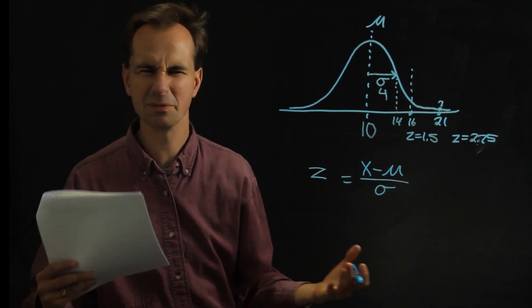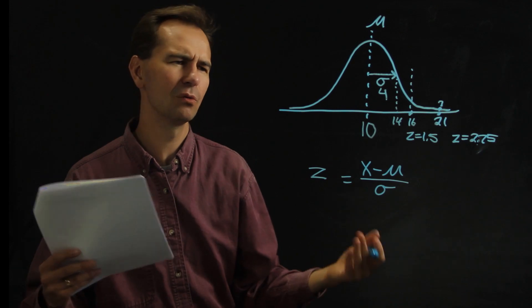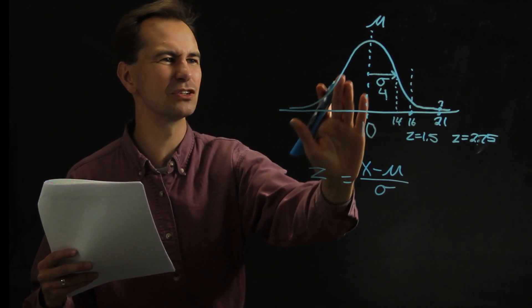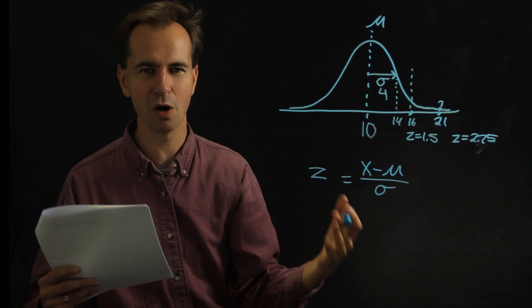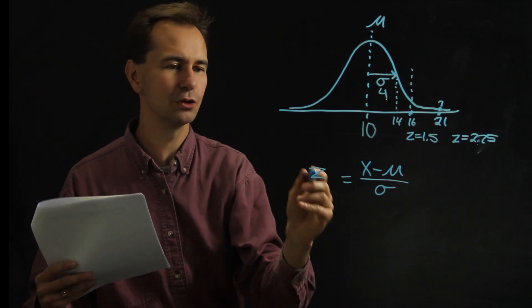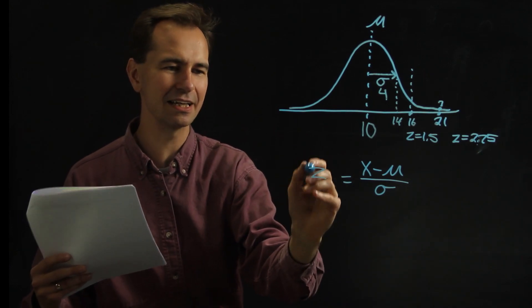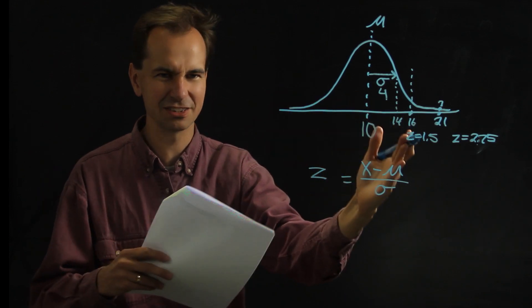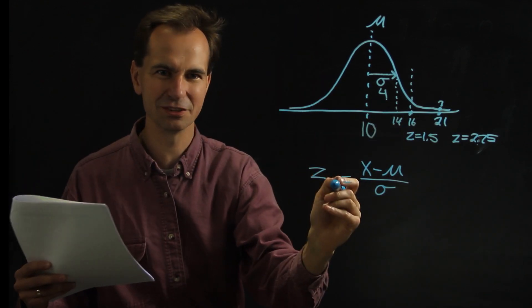So what's the point of needing a z-score? Well, it turns out that if you imagine that the total area under this curve is 1, or 100%, you could look up in a table and see how much of the curve is to the left of a particular z-value.